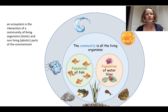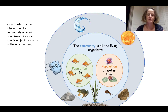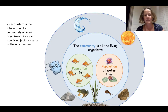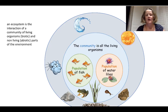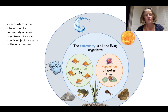Let's have a look at this pond system here. We have populations of fish — that's groups of similar organisms — populations of plants, water lilies, and we have lots of other organisms living in this community, so frogs, other types of plants and snails. Also affecting the pond are all the abiotic factors.